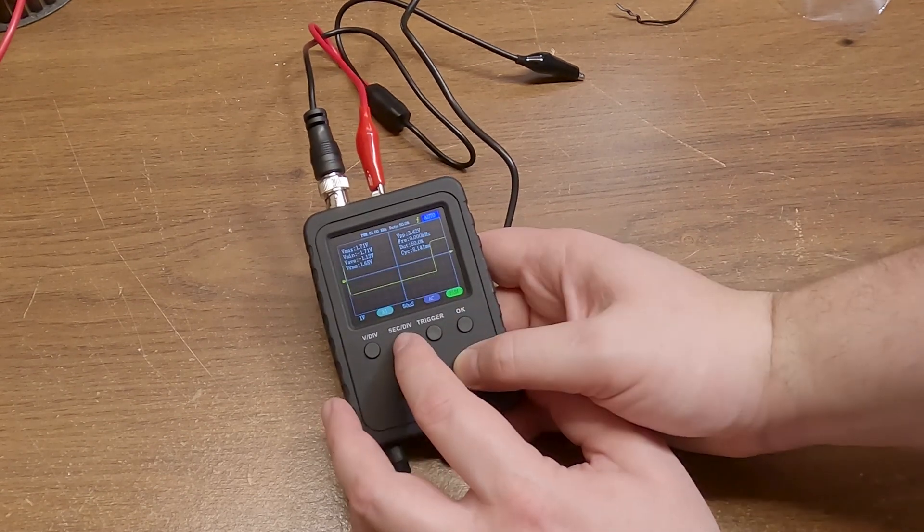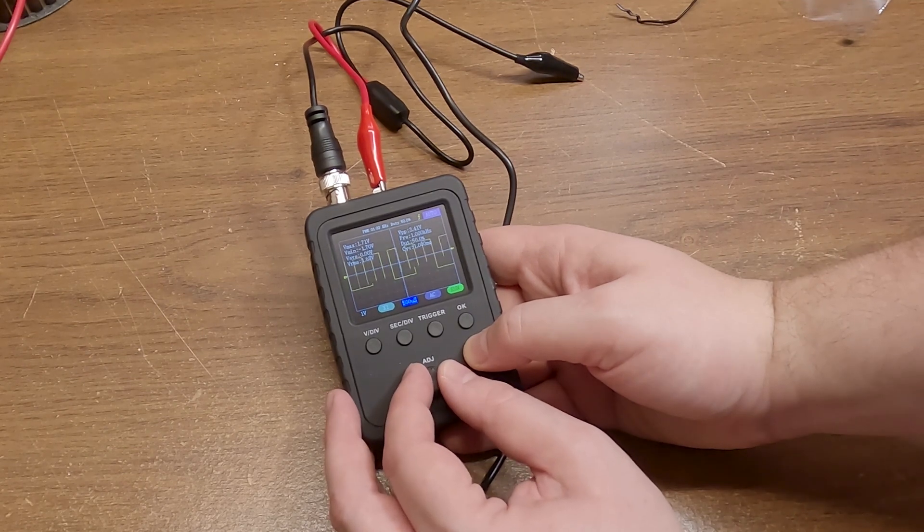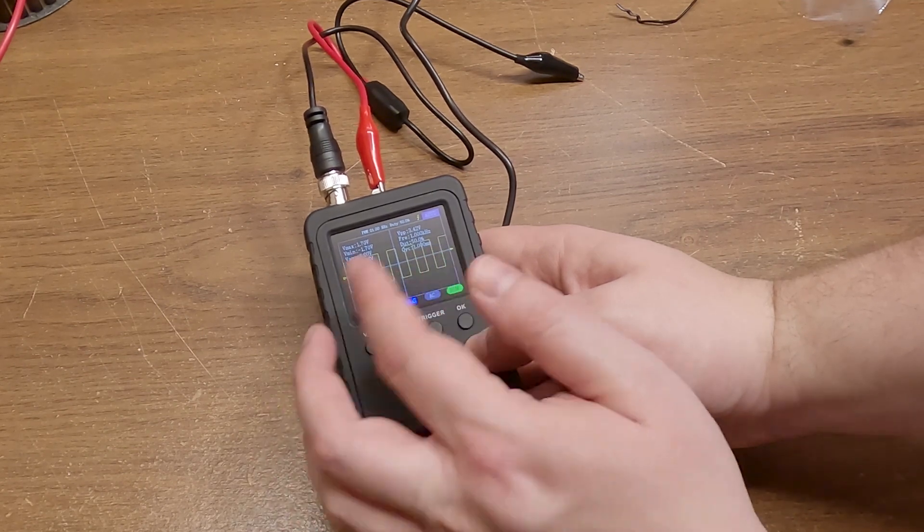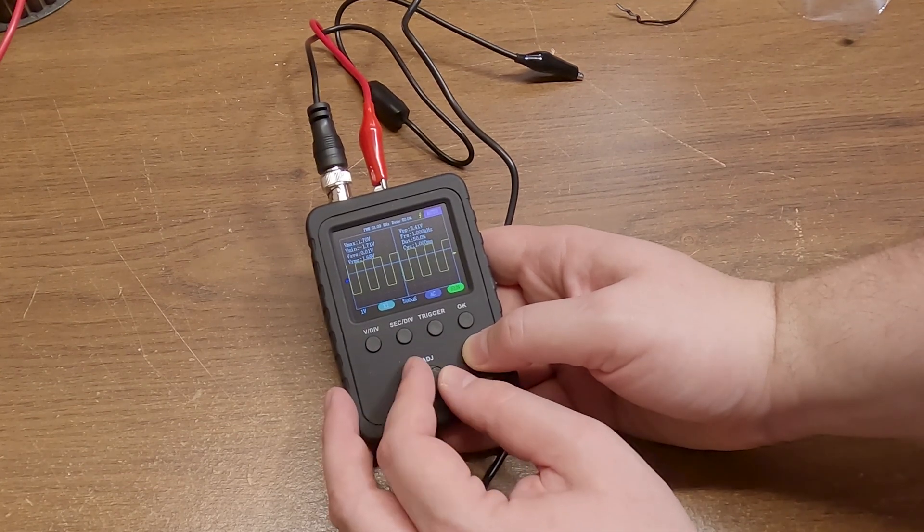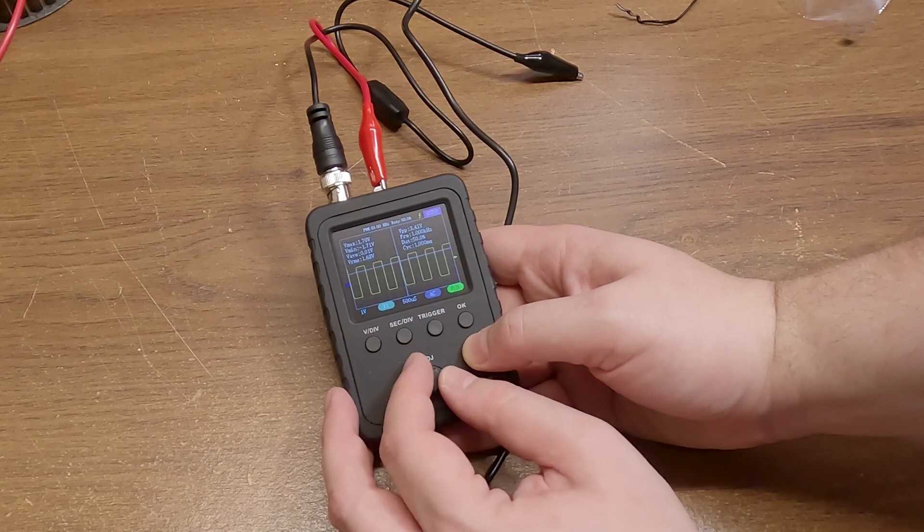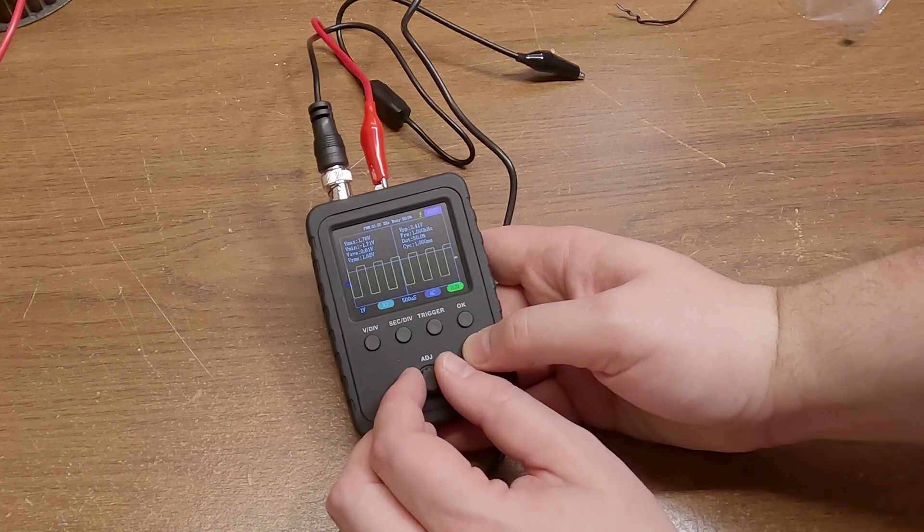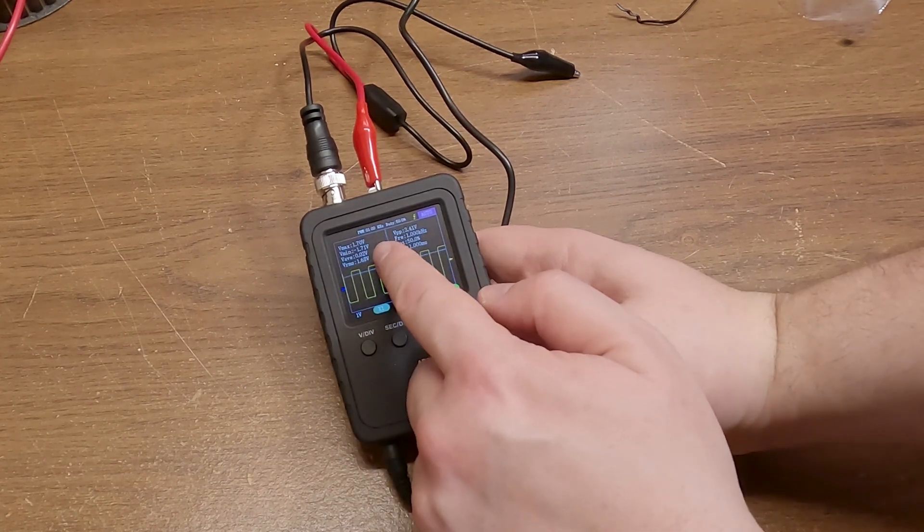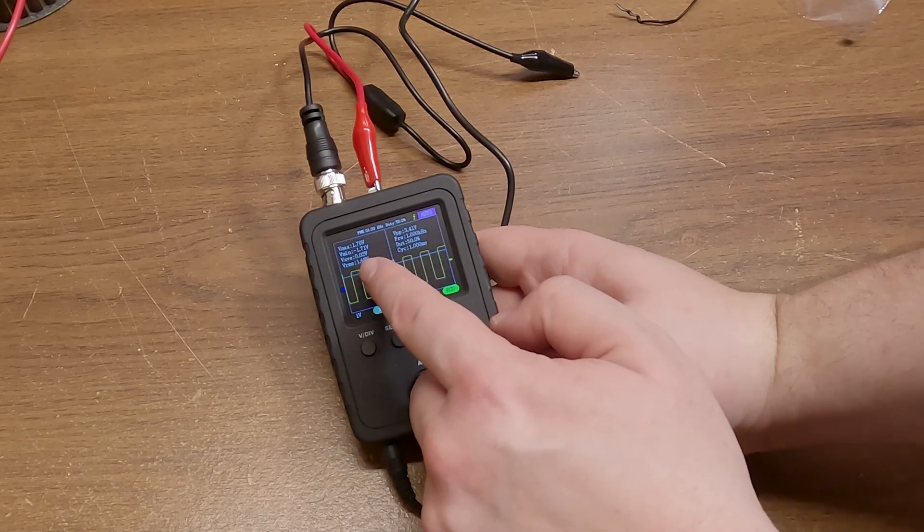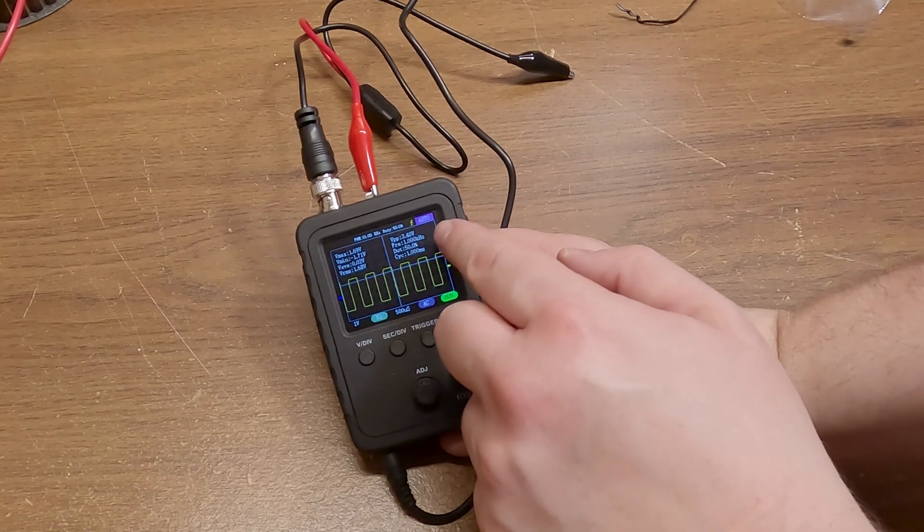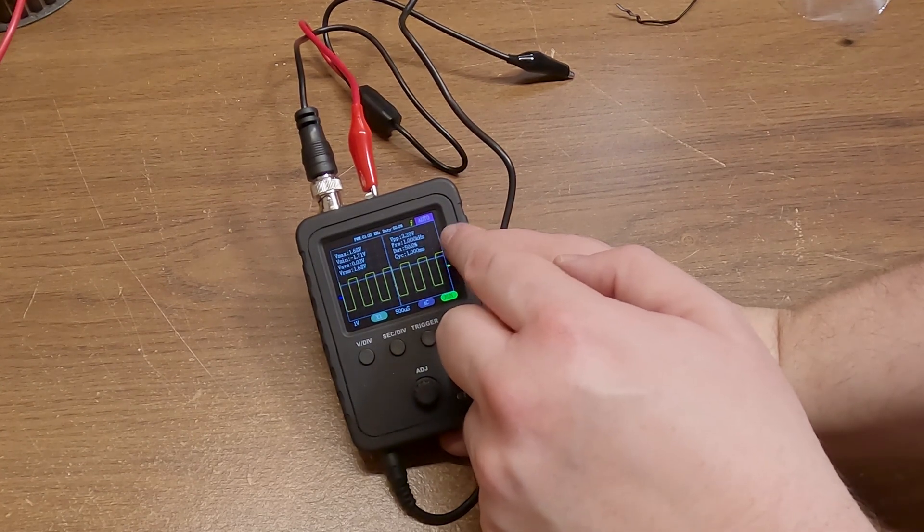This button right here will change the time division so you can make sure you fit your whole waveform on the screen. And this button over here adjusts where on the screen it's gonna display the waveform; it basically just raises and lowers your baseline voltage. Now up here at the top of the screen we have some very good information: maximum voltage, minimum voltage, average voltage, and voltage RMS. It also shows you the frequency, the duty cycle, and the cycle. That's some pretty good information with this little guy.